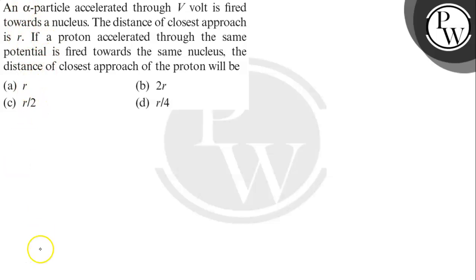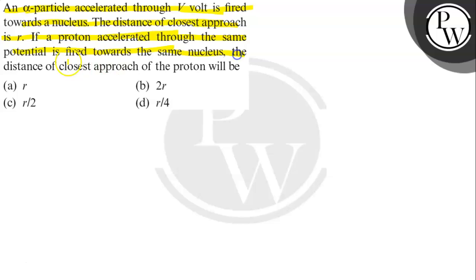Hello, let's read the question. An alpha particle accelerated through V volts is fired towards a nucleus. The distance of closest approach is R. If a proton is accelerated through the same potential and fired towards the same nucleus, what will be the distance of closest approach of the proton?